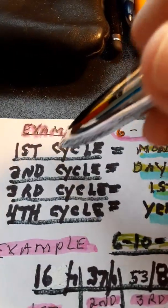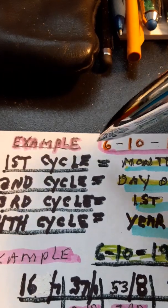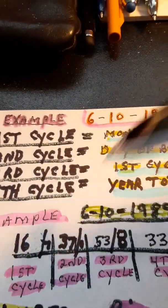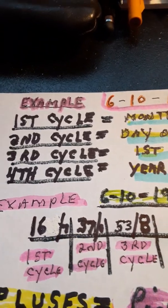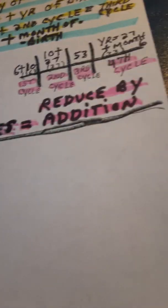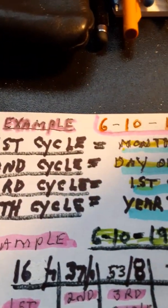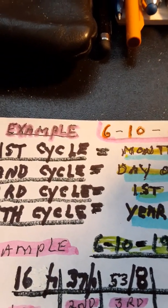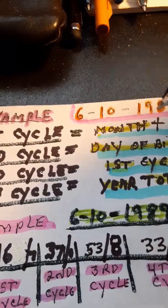The first cycle of lifetime numerology is the month and the day added. So in this case, it was June 10th, and that would be 16. 6 plus 10 is 16, and 16 is a 7. When it comes to pinnacles, we add the numbers of the pinnacles and we reduce by addition. The numbers are reduced because we're adding 1 and 6, 16, to get a 7. So that's the first cycle.